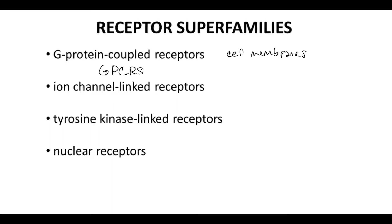GPCRs are also called seven transmembrane domain receptors. Because the time from ligand binding to response is relatively long, ligands that bind GPCRs are sometimes called slow neurotransmitters.